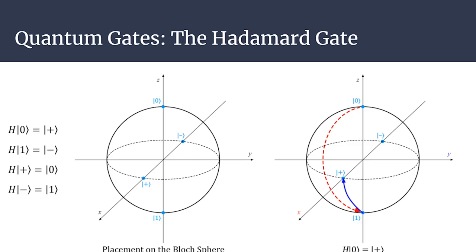The Hadamard gate is its own inverse: H|+⟩ takes you back to 0, and H|−⟩ takes you back to 1. The 0 goes to the plus state, which we consider as having a relative phase of 0. The 1 goes to the minus state, which compared to the plus state has a phase of 180 degrees. Now that they're both on the plane, we can rotate them using a rotation operator, which is the next thing we'll cover.